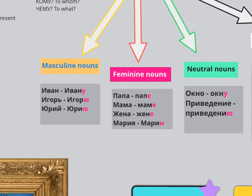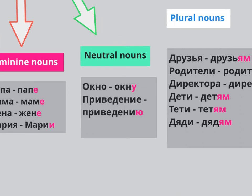Let's move on to the neutral nouns — they're not supposed to be problematic because they're like masculine nouns. We have ОКНО ending in О, and ПРИВИДЕНИЕ — which is a ghost — ending in Е. Neutral nouns have О or Е at the end. All you need to do is get rid of the last letter and substitute with У or Ю. Generally, if you have Е at the end, you'll have ЕЮ when you change it to dative.